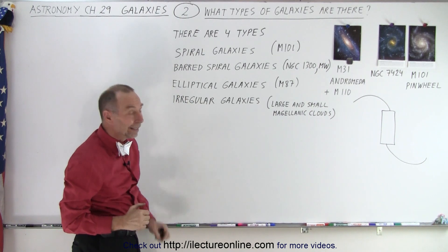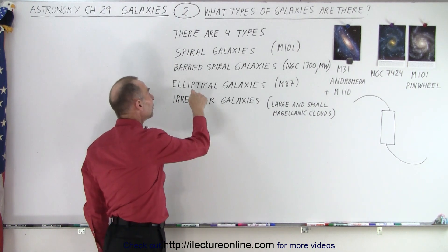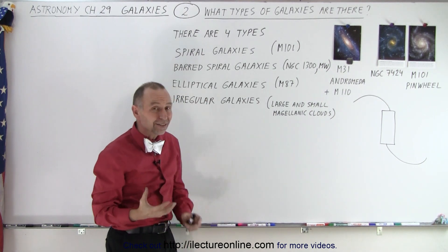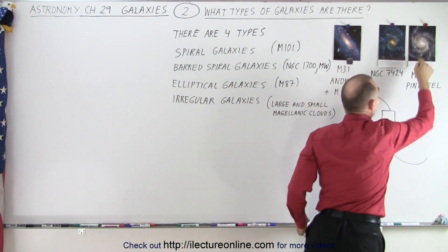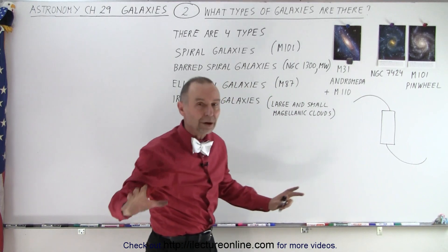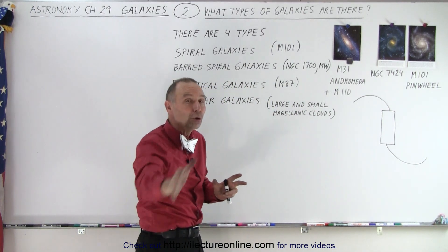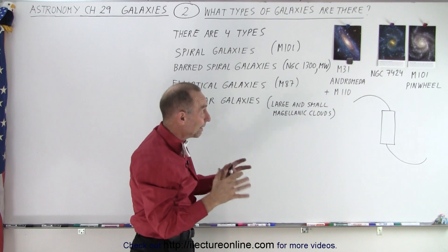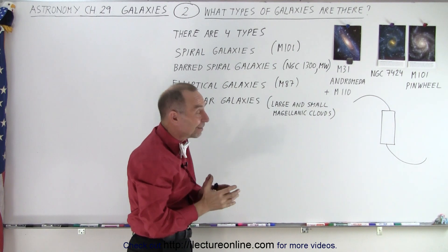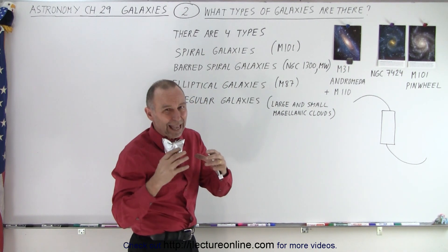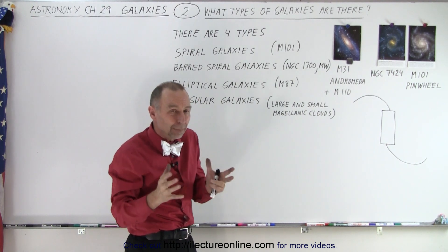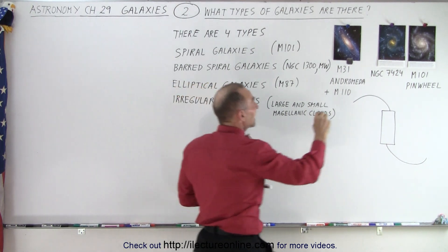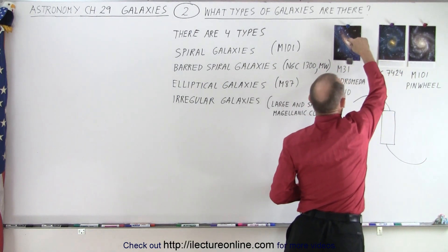Then we have what we call elliptical galaxies. Elliptical galaxies essentially seem to be just the central portion of the spiral galaxies without the spiral arms. Now, the spiral arms are typically where all the new stars are forming in spiral galaxies, so the central bulge has older stars and doesn't have a lot of star formation or nebulas there.